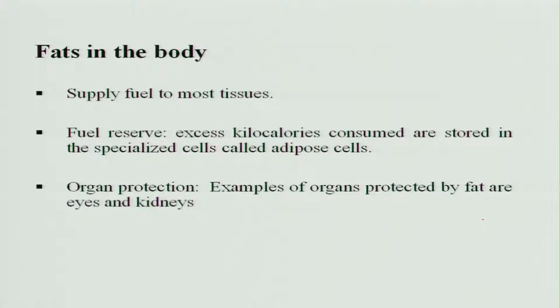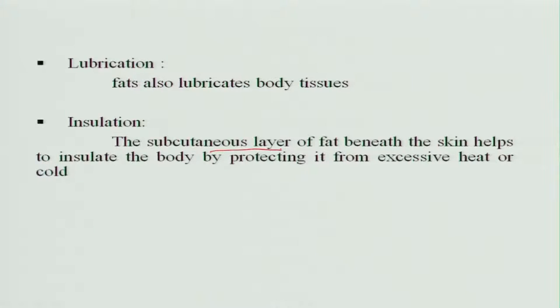Fats in the body supply fuel to most tissues and act as a fuel reserve. Extra kilocalories consumed are stored as adipose tissue and released during starvation or prolonged illness. For organ protection, organs like the eyes and kidneys have a layer of fat protecting them from injury. Fats also help lubricate body tissues, and subcutaneous fat under the skin insulates the body, protecting us from excessive heat and cold.